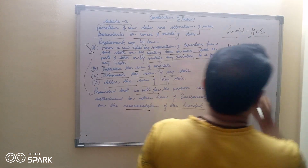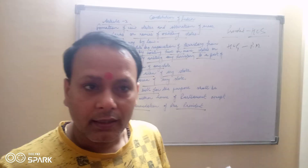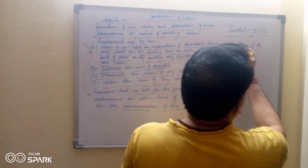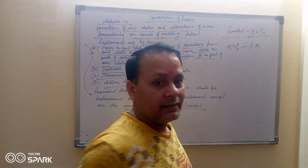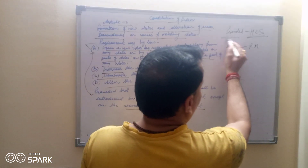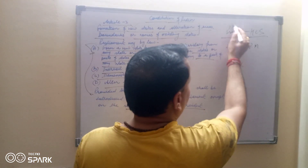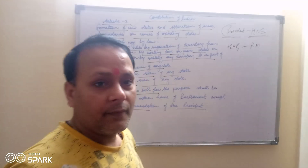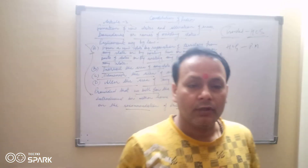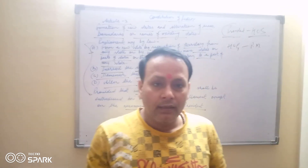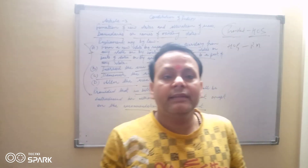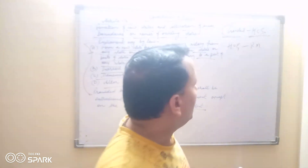PM — Prime Minister of India — is the Head of the Government, and President of India is the Head of the State. And the President of India is part of the parliamentary system of the Government. We have already been governed by parliamentary system of the Government in democratic form.